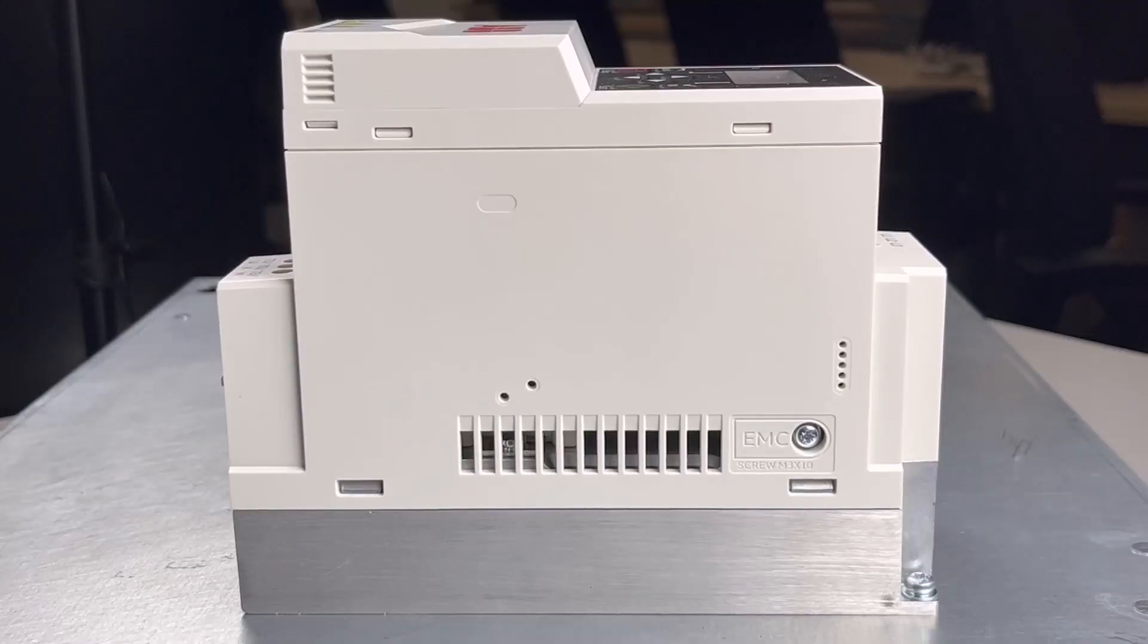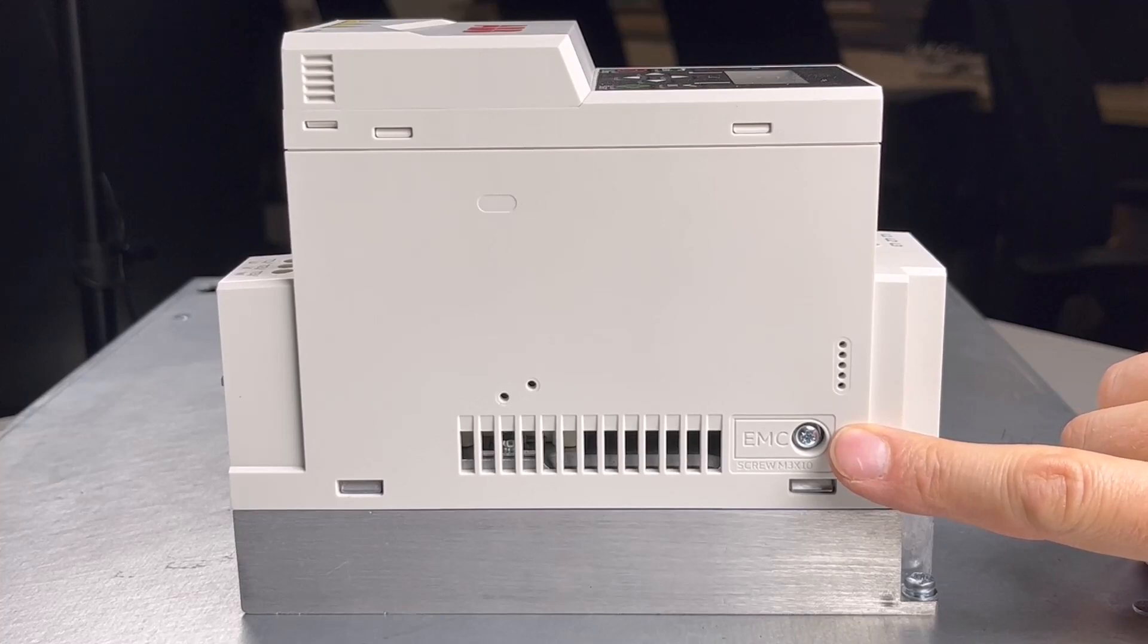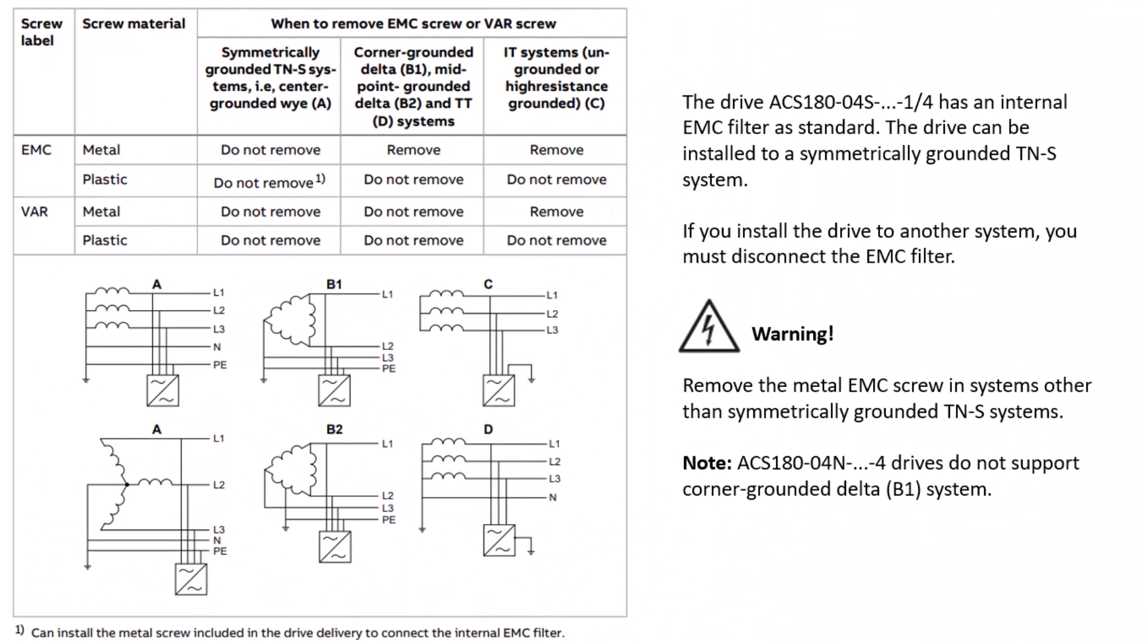The ACS-180-04S-1 and -4S have an internal EMC filter standard. You can install the drive to a symmetrically grounded TNS system. If you install these drives to any other system, you must disconnect the EMC filter prior to power up. Please see the hardware manual for information on how to determine the grounding system of the electrical power network.